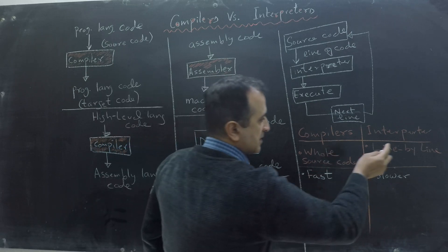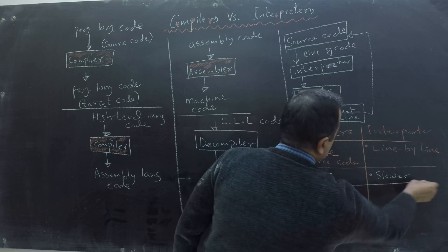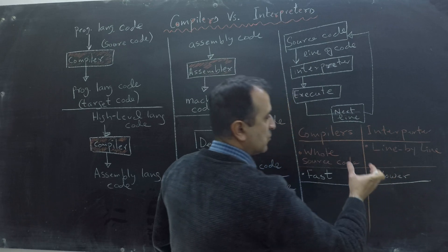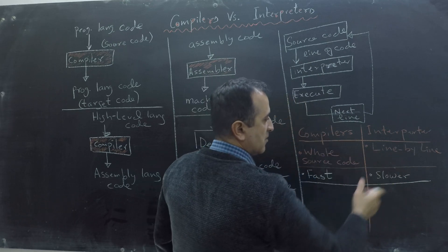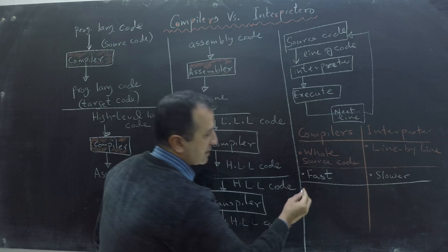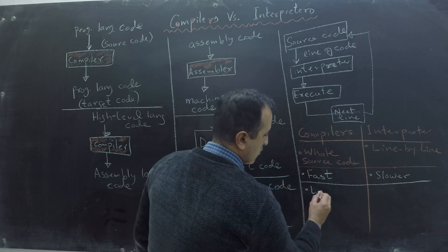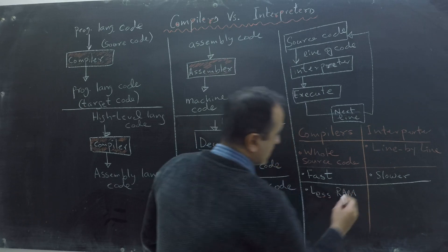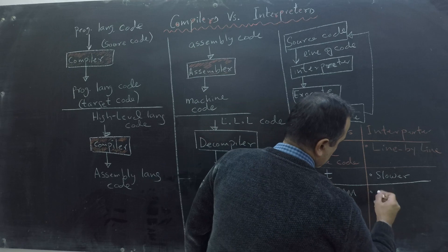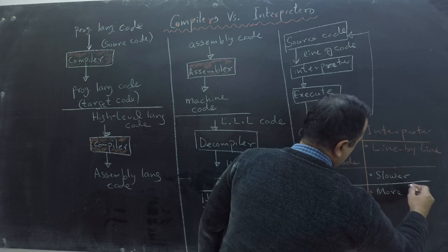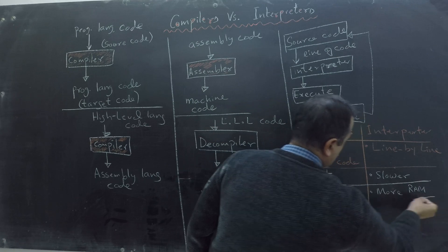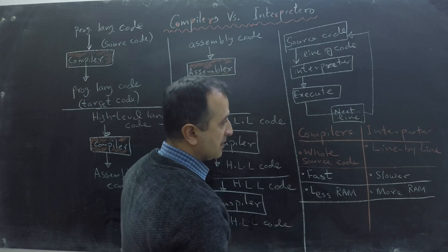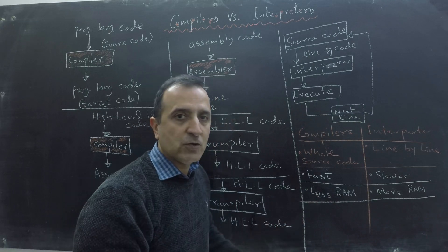So compilers are faster and interpreters are slower. Also, we only have to compile once with a compiler, whereas we have to interpret the code every time we want to execute it. Similarly, compiled programs take less RAM compared to interpreted programs. So compilers are faster and take less RAM — then why would we use an interpreter?